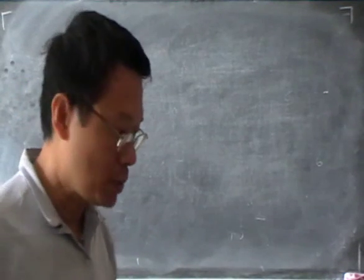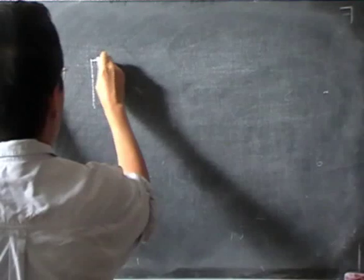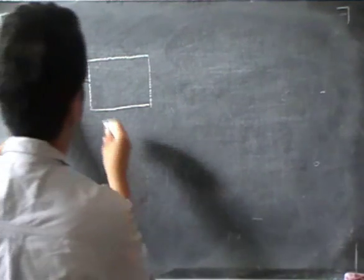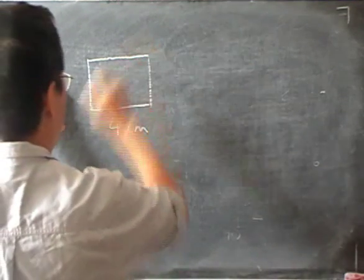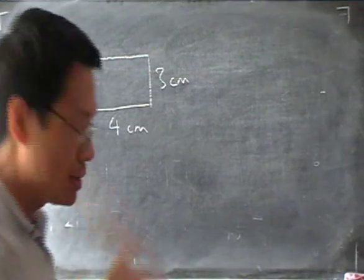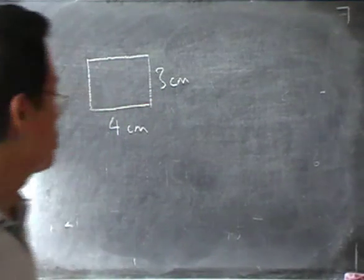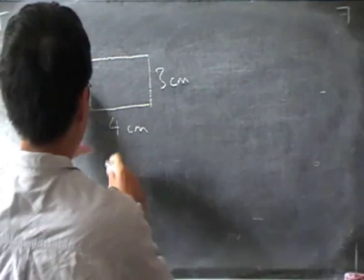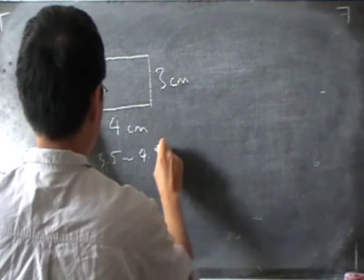So things can get a little bit more complicated if we want to find the area of a book. Let's say I have a book, and let's say the length of this book is 4cm, and the width is 3cm. But suppose that actually, they are not exactly 4 and 3cm, that the numbers 4 and 3 are just rounded off numbers, rounded to the nearest whole number. So that means actually, the length can be anywhere between 3.5 and 4.5 cm.